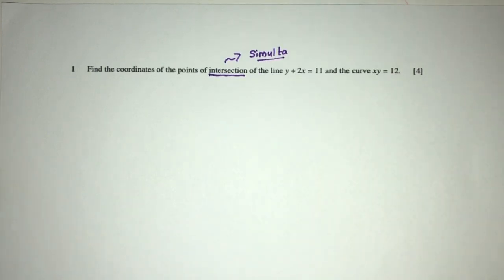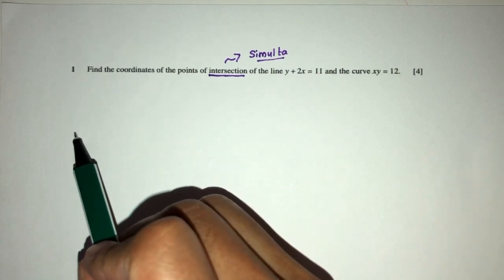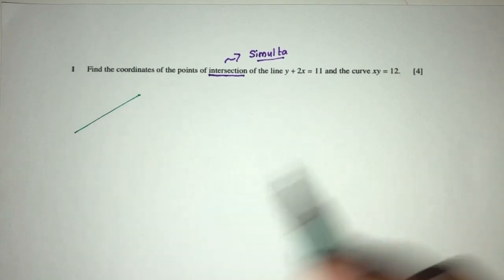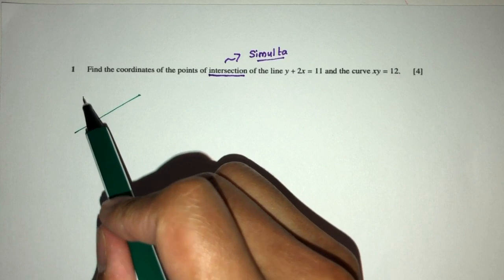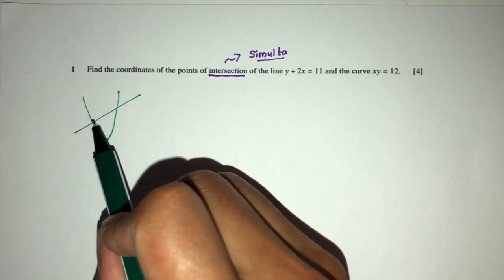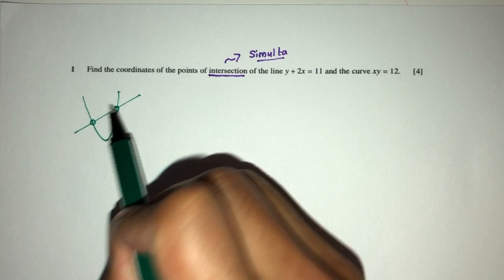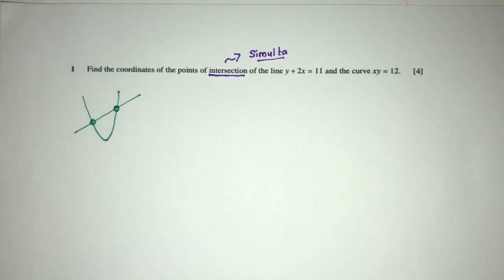For example, the main idea here is that we have a line, let's say this is our line, and then we have a curve. You can see we have two points of intersection, so we have to find those two points. That's the main idea behind this question.